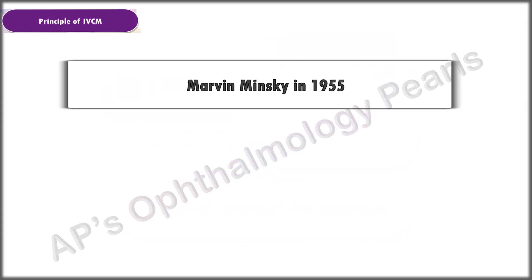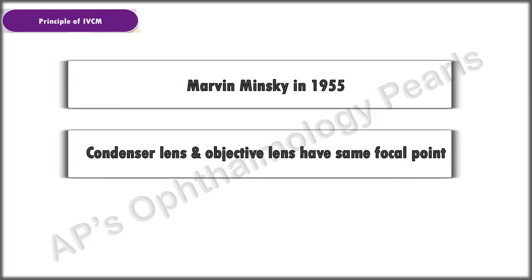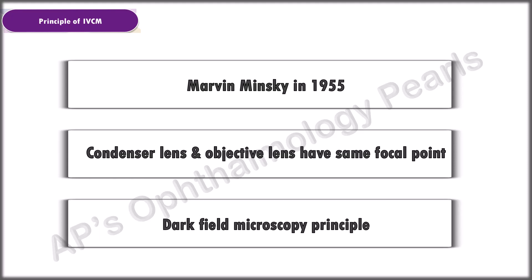The principle of confocal microscopy was first introduced by Marvin Minsky in 1955. The term confocal is used because the condenser lens that focuses light on an area of tissue has the same focal point as the objective lens that focuses on the same area. IVCM uses the dark field microscopy principle wherein transmitted light is blocked — such as from the transparent cornea, which therefore appears dark — and only light scattered by structures such as cells, organisms and particles reach the detector, rendering them bright.